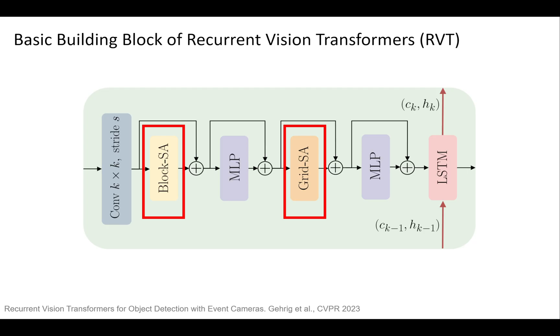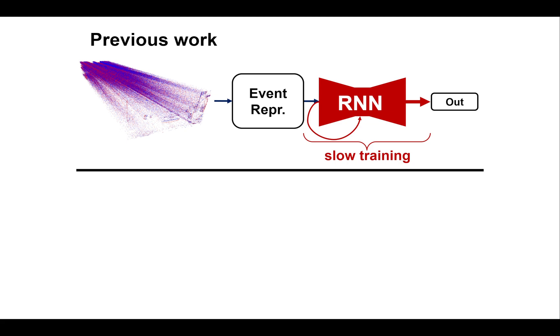Previous works, such as Gehrig's Recurrent Vision Transformers, employ attention for spatial processing and LSTM for temporal processing. While these approaches are effective, they suffer from slow training due to the sequential nature of RNNs and cannot support higher inference frequencies due to their purely discrete temporal dynamics.